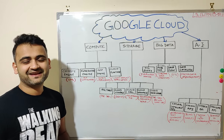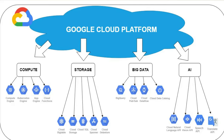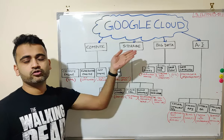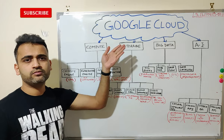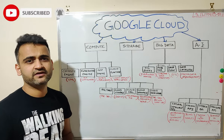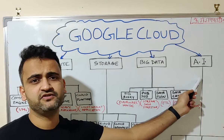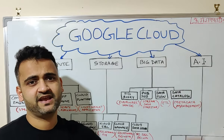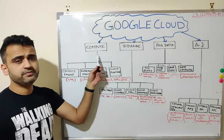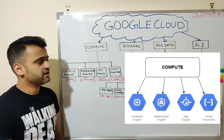Hello friends, welcome to this second video in our Google Cloud Platform beginner series. In this video we'll quickly understand the different products which Google Cloud Platform offers. We can divide GCP products and services into four different major categories: Compute, Storage, Big Data, and Artificial Intelligence.